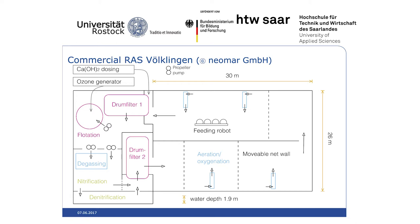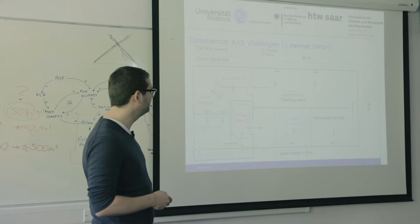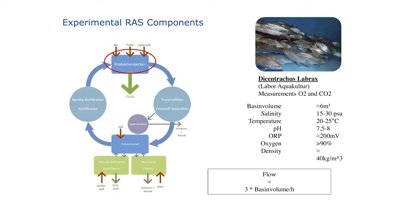In detail we have the tanks, the feeding robot, drum filtration, flotation, degassing, nitrification, and also denitrification — this is the part we want to replace with algae or maybe plants. Then a second drum screen, and it goes back into the system. Inside the system we have aeration with pure oxygen.